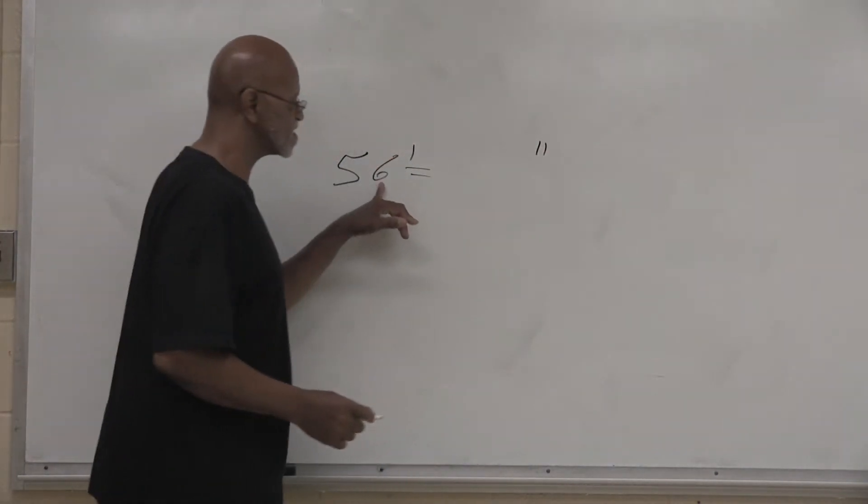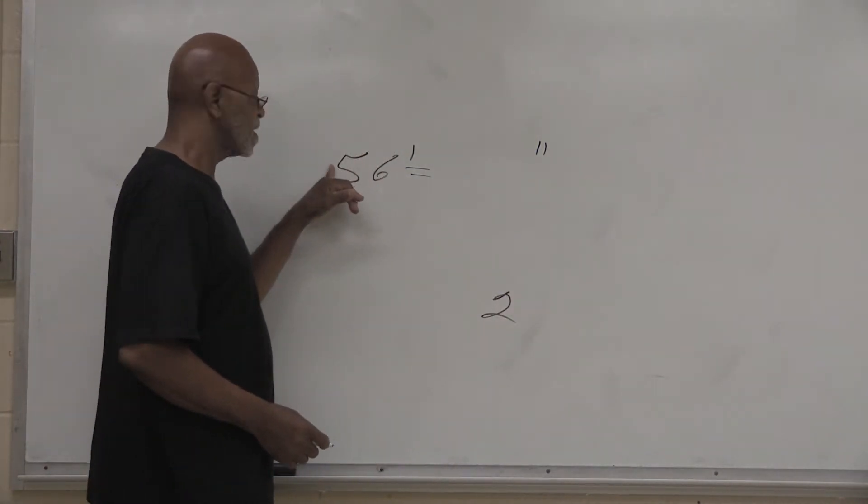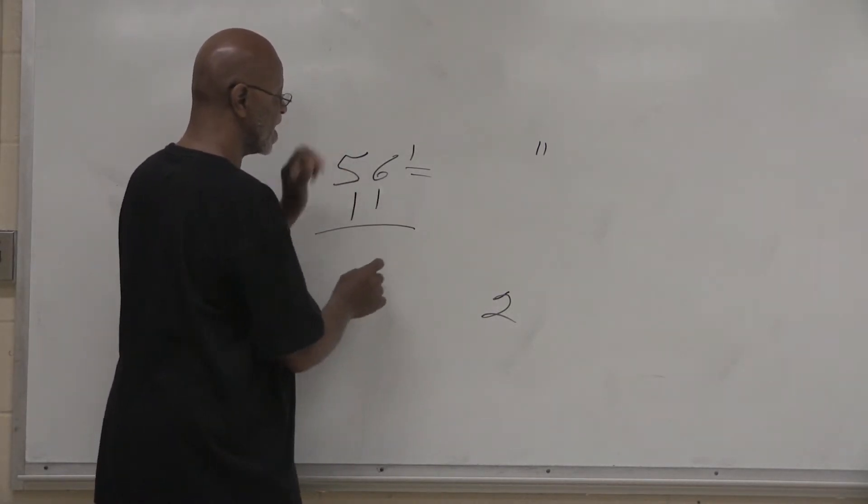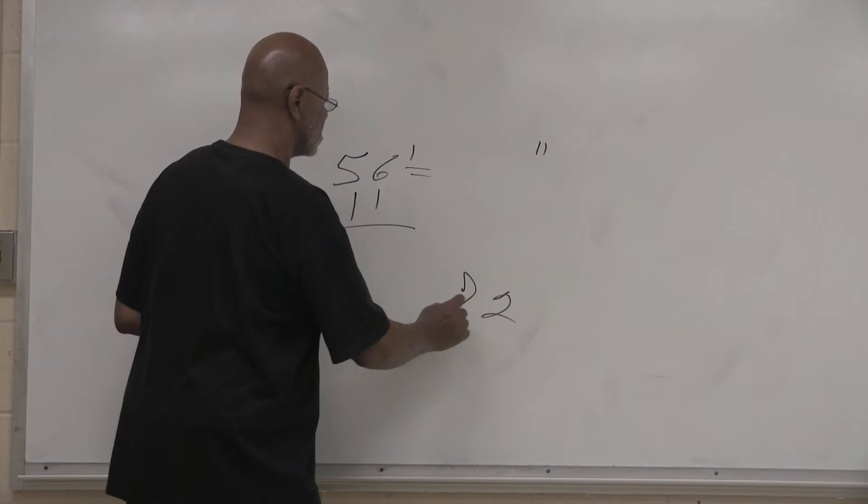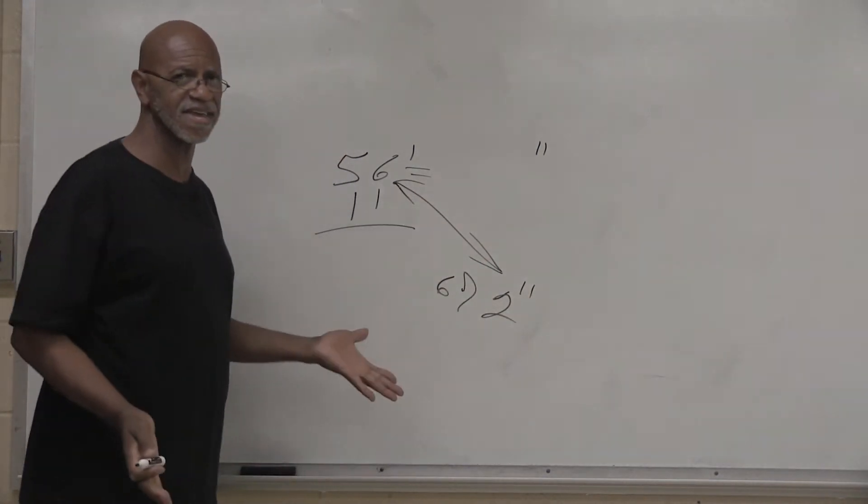6 plus 6 equals 12. I have to carry my 1. 5 plus 5 is 10, plus the 1 is 11. So 11 plus 56 gives us 672. That easy.